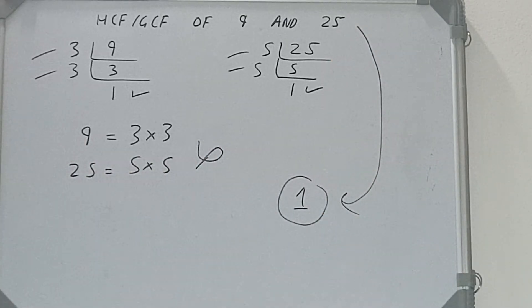So we can say that the HCF or GCF of the numbers 9 and 25 will be 1. So this is all. If you found the video helpful, please click the like button, do consider subscribing, and thanks for watching.